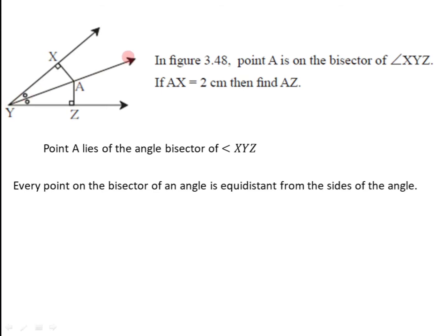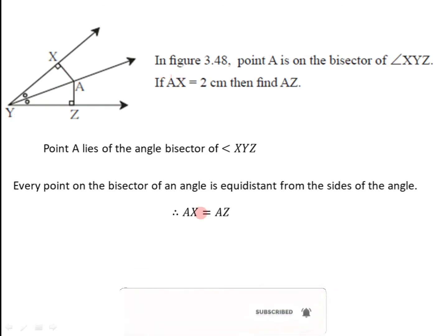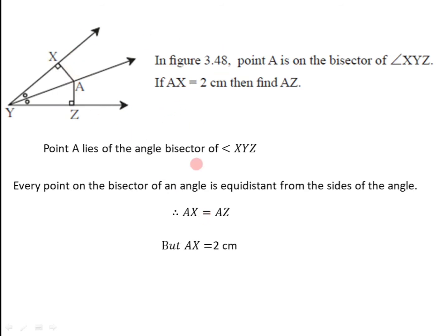Every point on this angle bisector must be equidistant from side XY and side YZ. Now here, AX is perpendicular to XY and AZ is perpendicular to YZ. These are the two distances of point A from sides XY and YZ. AX is given to be 2 cm. The distance of point A from side XY must equal the distance from side YZ, so AX must equal AZ. Therefore, the length of segment AZ is also 2 cm.